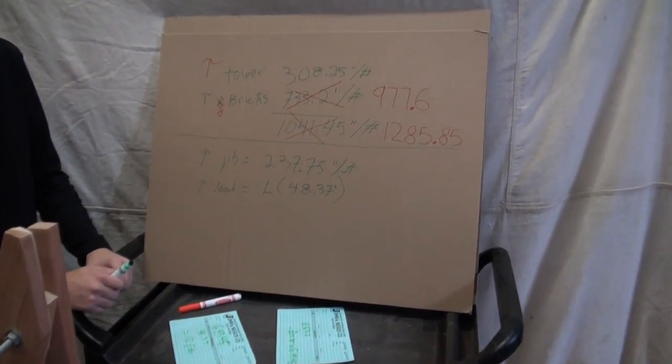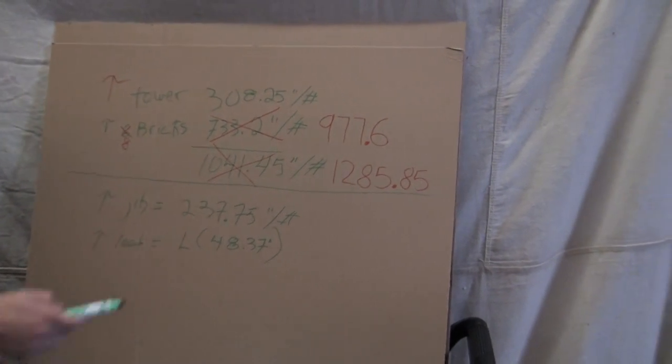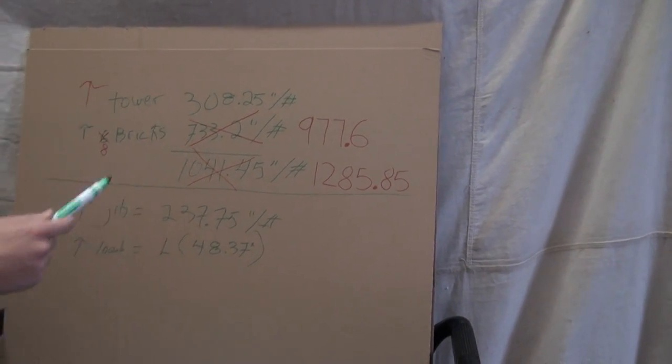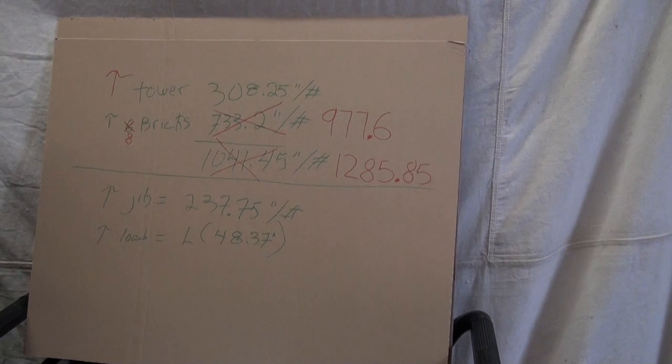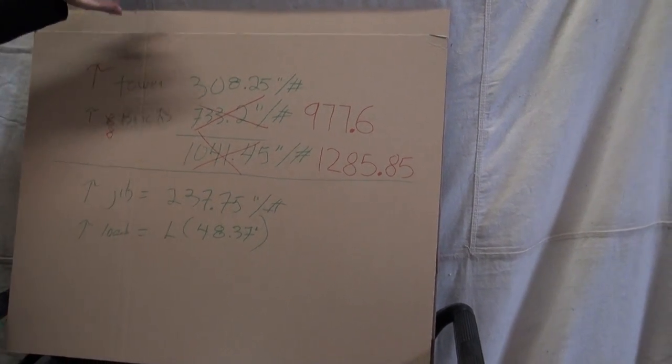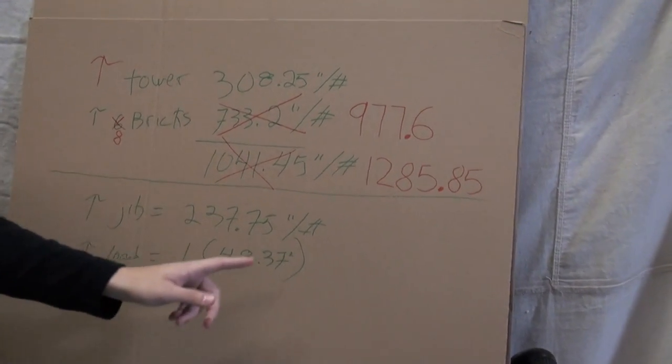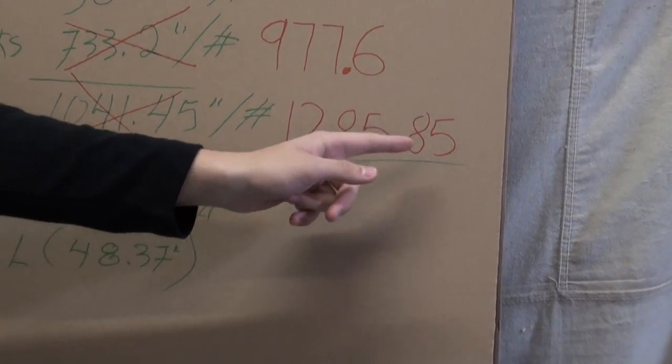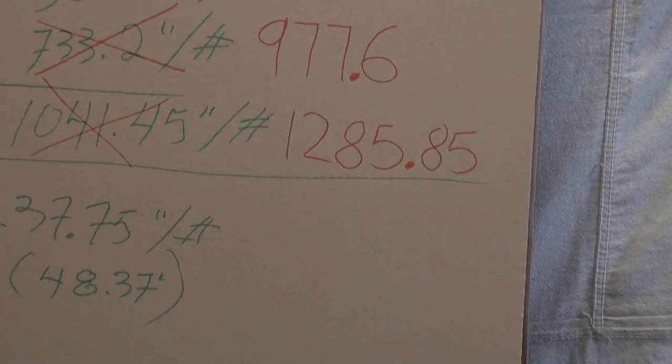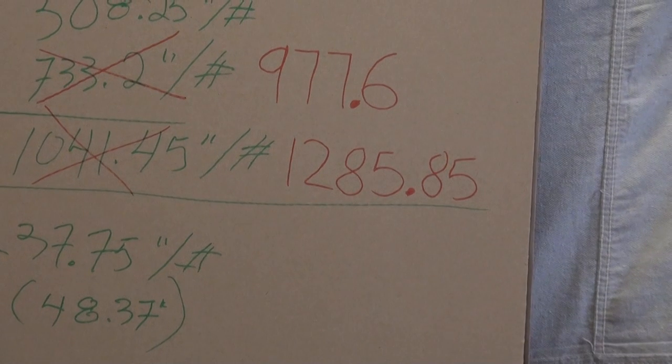So eight bricks gives us 977.6 inch-pounds of torque, and we want to add that to our tower counterweight, and that gets us a new torque of 1285.85 inch-pounds of torque.